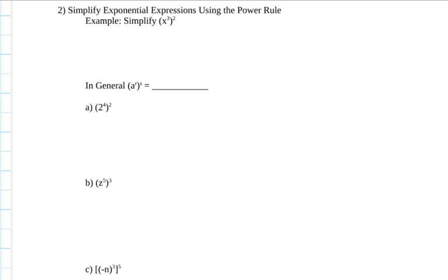For our second law of exponents, we're going to consider this sort of pattern. When we take something like x cubed and then we square it, this is something raised to an exponent and we're raising it to an exponent again.